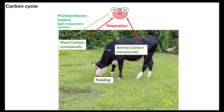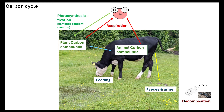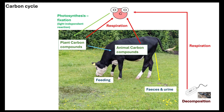Cows also need to excrete waste material — faeces and urine — which contain animal carbon compounds. Those carbon compounds are going to be decomposed by decomposers. Microorganisms release enzymes which digest the materials in the faeces and urine, utilise them in their own processes, and themselves carry out respiration.